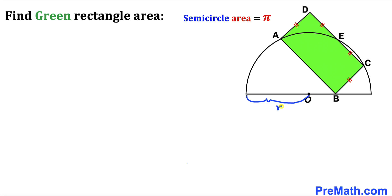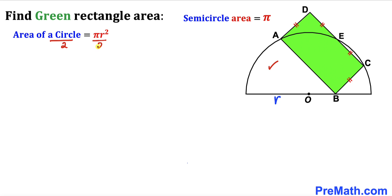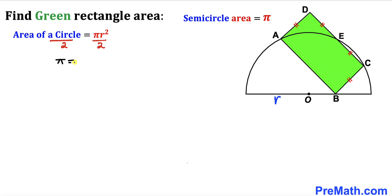Let's call this radius lowercase r. Recalling the area of a semicircle formula: area equals pi r squared divided by 2. The area has been given as pi, so we write: pi equals pi r squared divided by 2. Multiplying both sides by 2, we get 2 pi equals pi r squared.